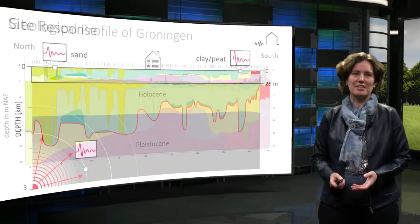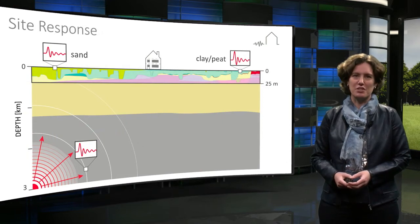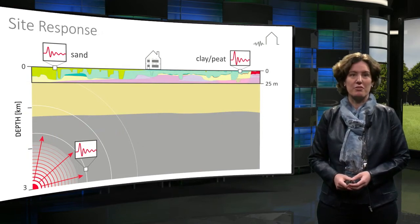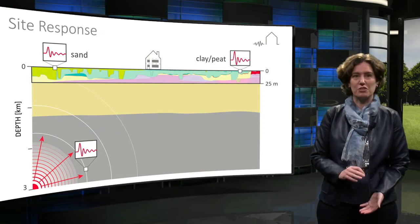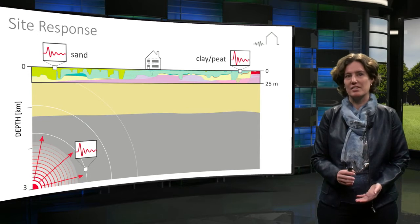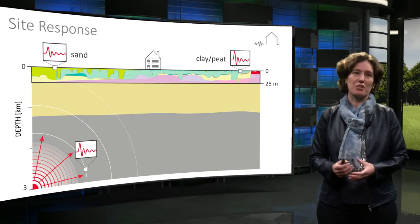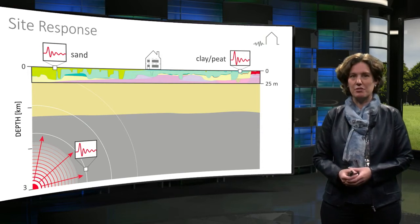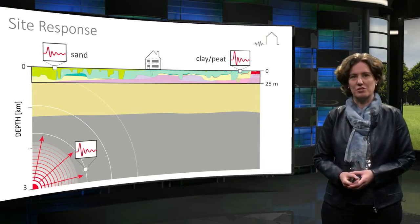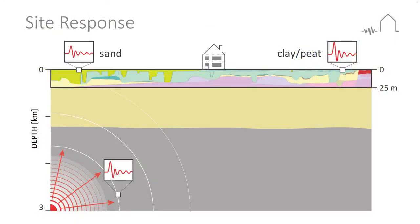Why is it important to know this? If a seismic wave formed by an earthquake travels from the stiffer soils like rock or dense sand to weaker soils like clay and peat, the wave can become stronger. This may lead to differences in the amplitude of the earthquake acceleration at the surface. If the wave travels through weak soils like clay or peat, the damping effect of the soil may on the other hand reduce the amplitude.